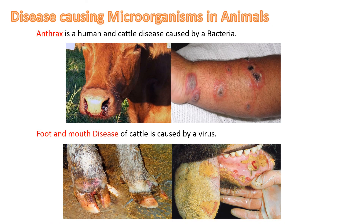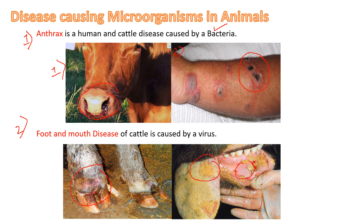Let's discuss disease-causing microorganisms in animals. Anthrax is caused by bacteria; it can infect cattle causing serious defects and in humans it causes blisters. Foot and mouth disease of cattle causes blisters on the foot and sores in the mouth, and for small cattle it can cause death.